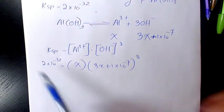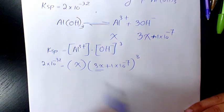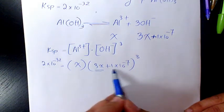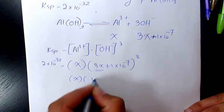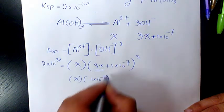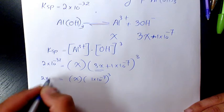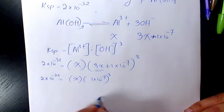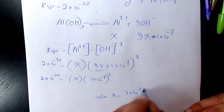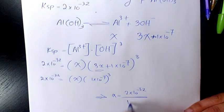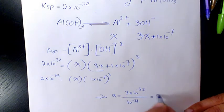I'm going to say I can neglect 3x comparing to 1 times 10 to the power of negative 7. So it's going to be X times 1 times 10 to the power of negative 7 to the power of 3 equals to 2 times 10 to the power of negative 32. So then X will be 2 times 10 to the power of negative 32 over 10 to the power of negative 21, that's going to be 2 times 10 to the power of negative 11 mole per liter.